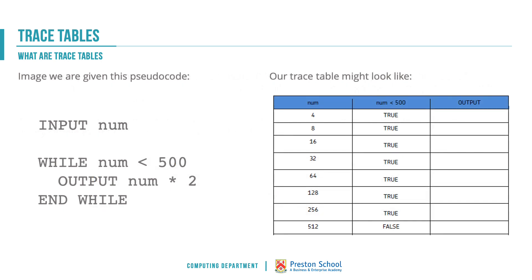Let's imagine we are given this pseudocode: input num, while num less than 500, output num times 2, end while. We would think about what different inputs we might get there, and there are obviously a range of different numbers we might have input. We're going to think about is our num less than 500 column true or false, and we then think about filling in our output column.